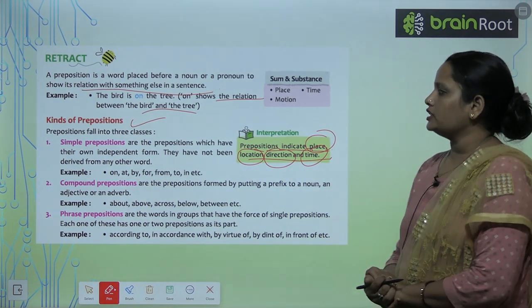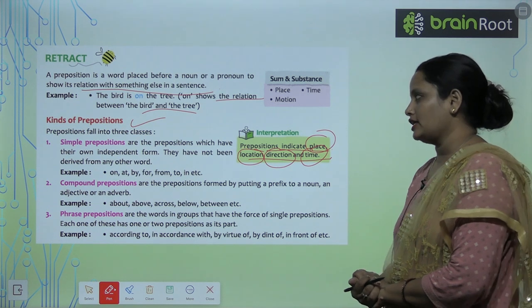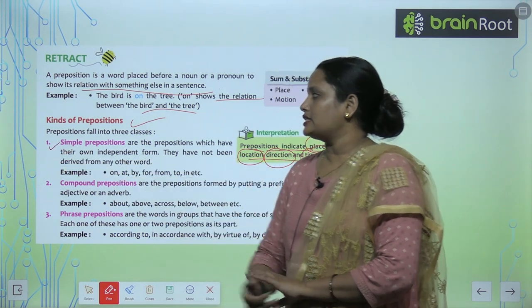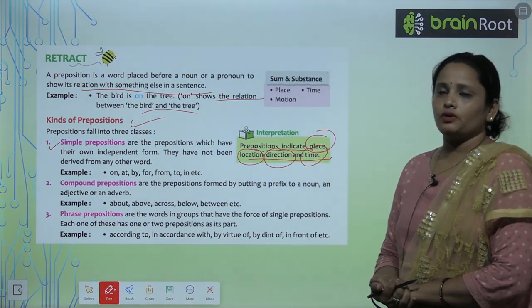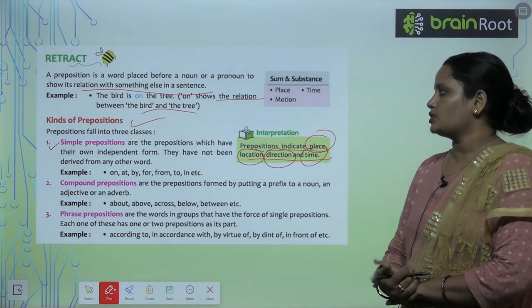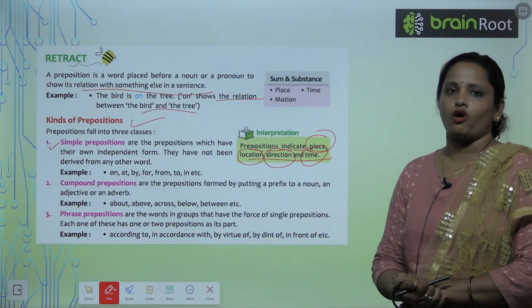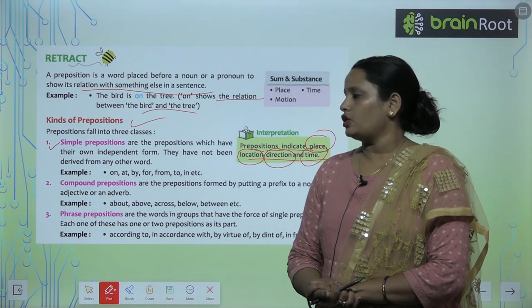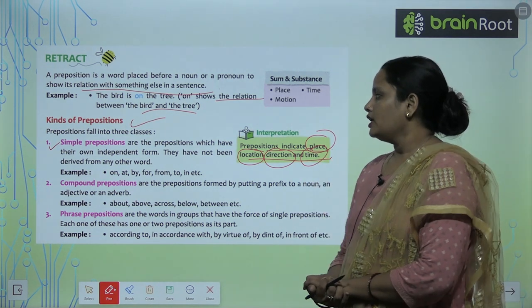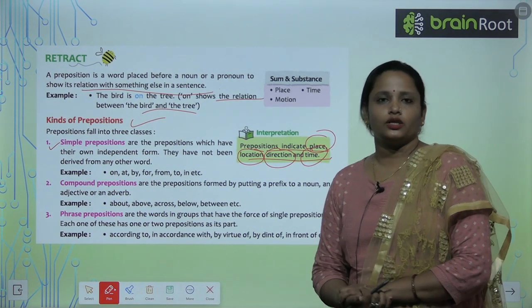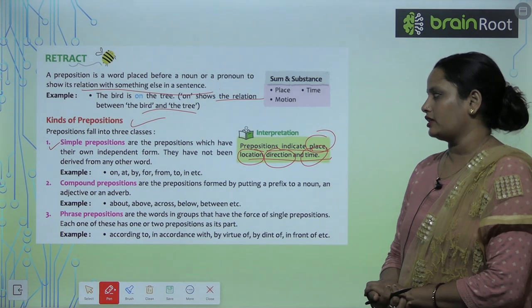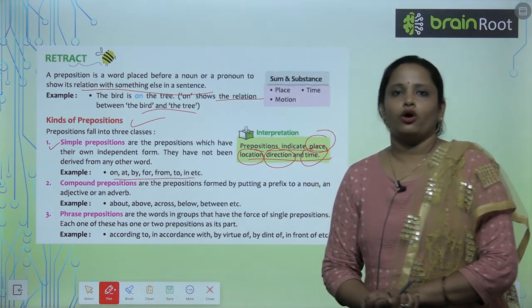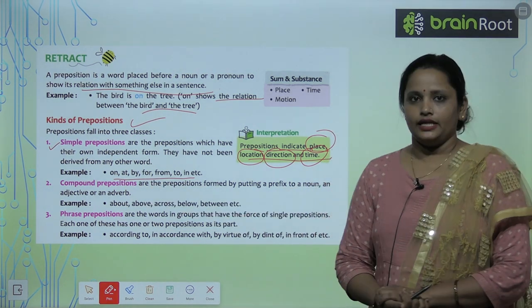Prepositions fall into three classes. The first is simple prepositions. Simple prepositions are the prepositions which have their own independent form — inke khud ke independent forms hoti hain. They have not been derived from any other word. For example: on, at, by, for, from, in, etc.